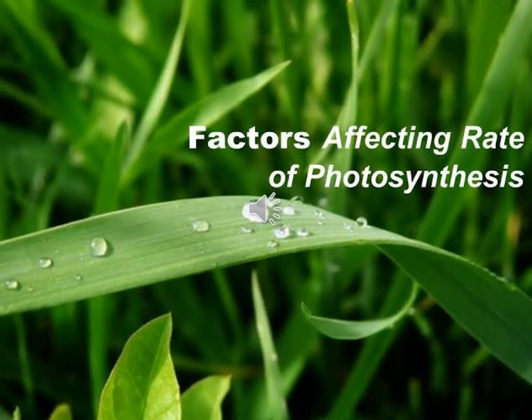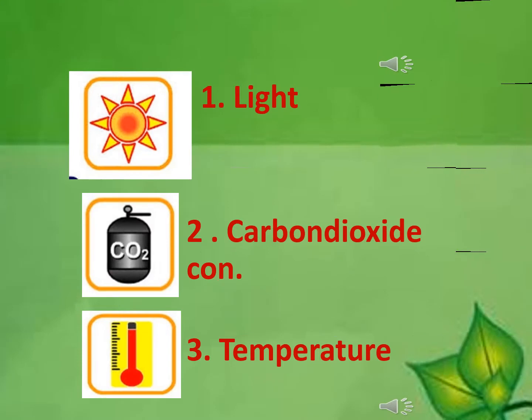There are a number of factors that can interact for the process of photosynthesis to work. There are three main factors: light, carbon dioxide concentration, and temperature. Any one of these could be a limiting factor — a factor that directly affects the rate of photosynthesis on its own, regardless of the level of the other factors.